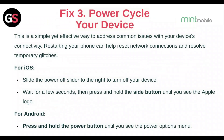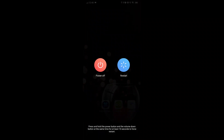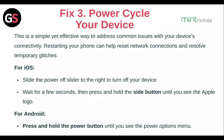Fix 3: Power cycle your device. This is a simple yet effective way to address common issues with your device connectivity. Restarting your phone can help reset the network connection and resolve temporary glitches. For iOS, slide the power off slider to the right to turn off your device, wait a few seconds, then press and hold the side button until you see the Apple logo. For Android, press and hold the power button until you see the power options menu, then tap restart or reboot and confirm by tapping OK.